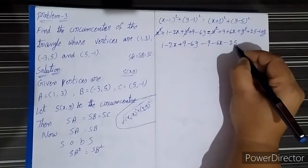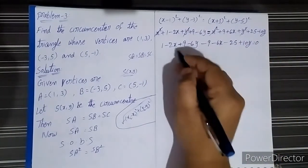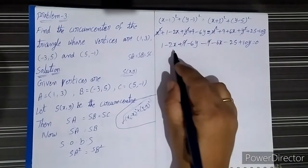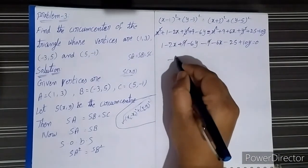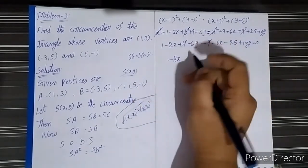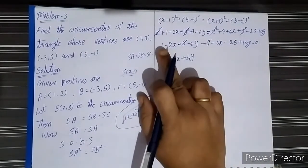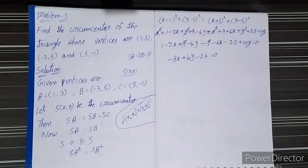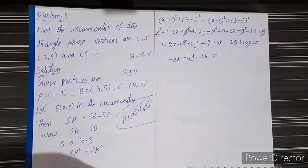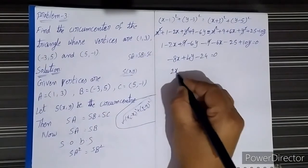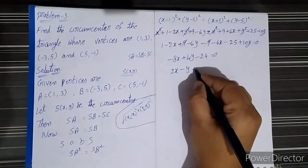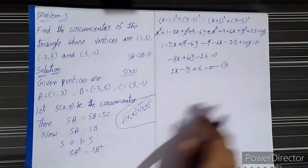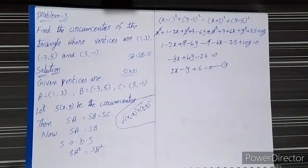Taking all values to one side: -9 - 6x - 25 + 10y = 0. The 9s cancel, giving -2x - 6x - 6y + 10y + 1 - 25 = 0, which simplifies to -8x + 4y - 24 = 0. Taking -4 as common: 2x - y + 6 = 0. This is Equation 1.